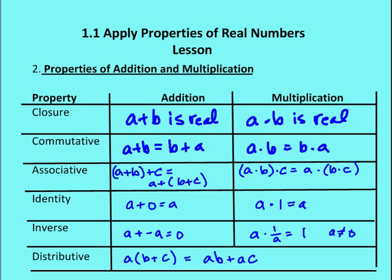The identity property of addition says that a+0 equals a. The identity property of multiplication says that a·1 equals a.